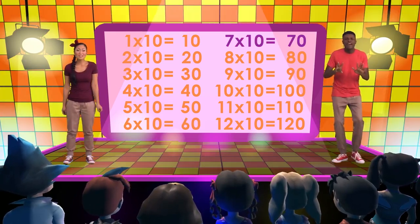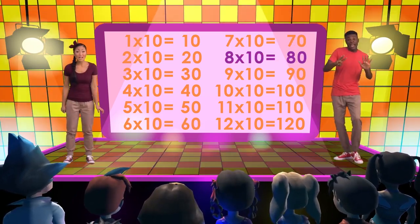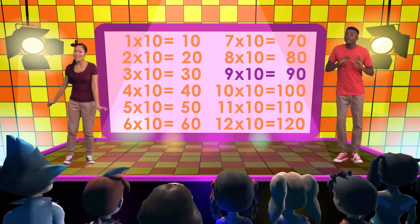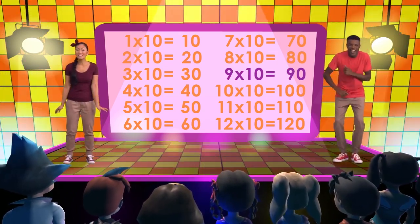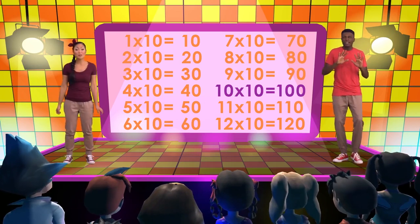Seven times ten is seventy. Eight times ten is eighty. Nine times ten is ninety. And ten times ten is one hundred.